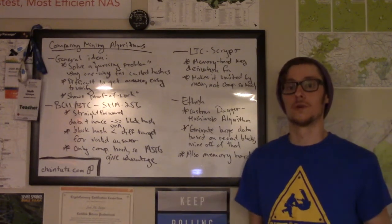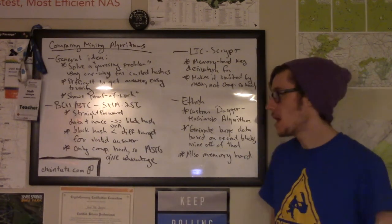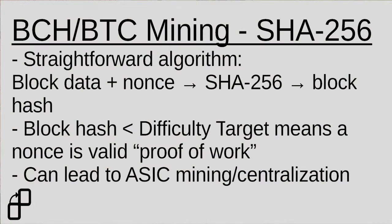SHA-256 was the original proof-of-work algorithm that came into existence with Bitcoin being the first cryptocurrency. This is a pretty straightforward algorithm. The way it works is there is block header data, and miners add a nonce — which is the name for their random guess for the problem — to that block data. They run that through the SHA-256 algorithm and output a block hash. In order for this answer to the proof-of-work problem to be valid, the block hash, treated as a 256-bit number, has to be less than the difficulty target specified by the Bitcoin network.